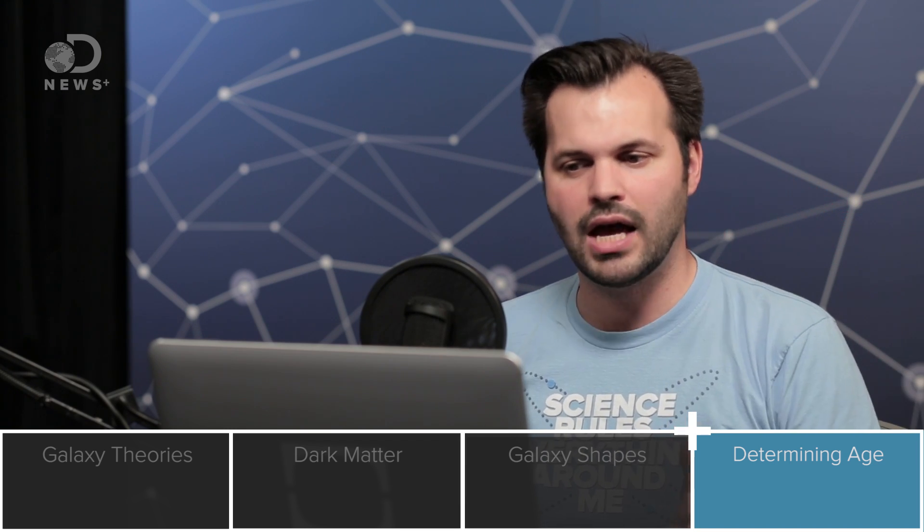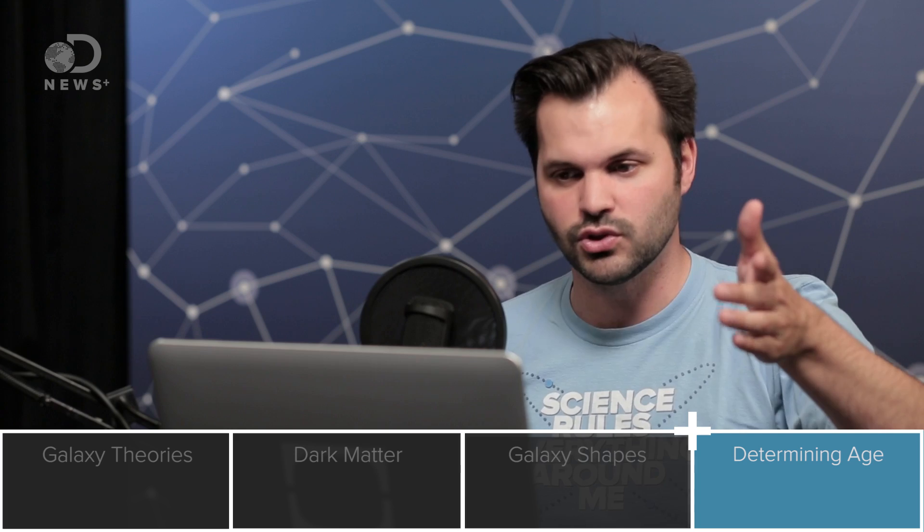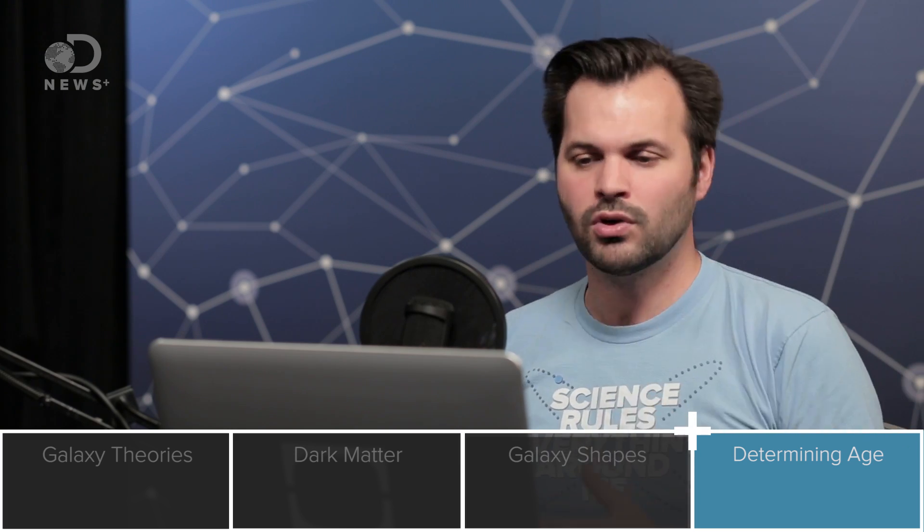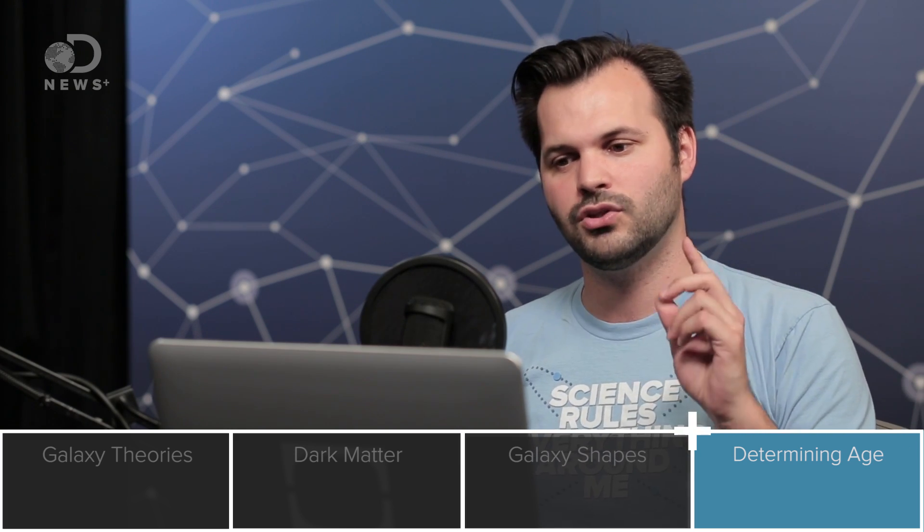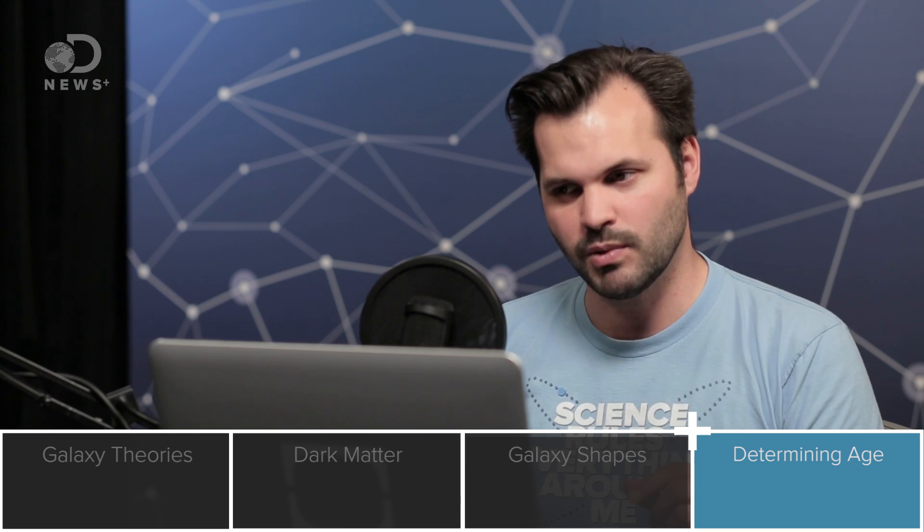And our closest neighbor galaxy is the Andromeda galaxy, which is 14 quintillion miles away. So when we see Andromeda, we're not looking at it now. We're looking at it 2.5 million years ago, because space is really huge.